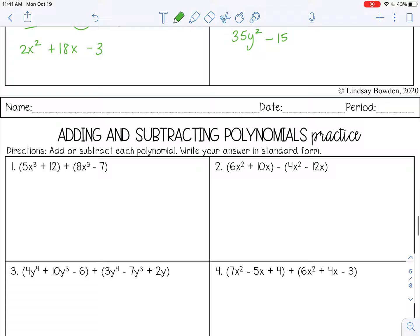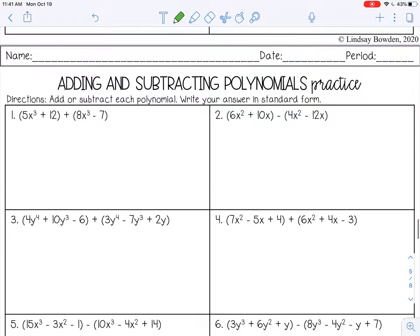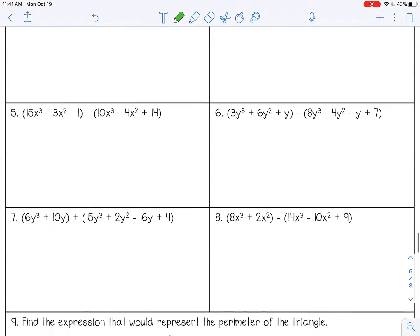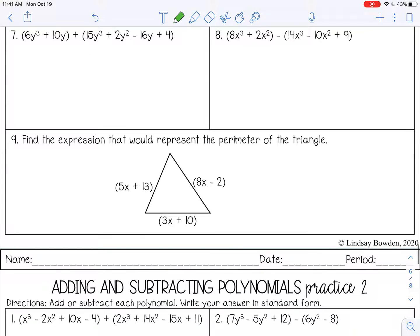Now you can go ahead and do your practice. I did want to show you one thing on the practice that is unlike anything we did in the notes, just so you are aware. So if you go all the way down to the bottom on number 9, it says find the expression that would represent the perimeter of the triangle. So perimeter, if you remember from middle school, is the distance around a figure.